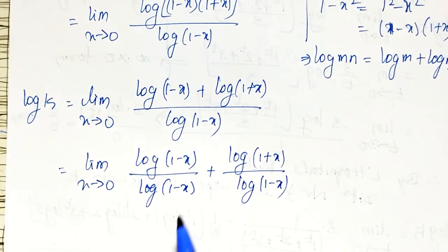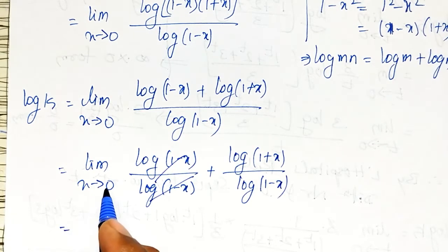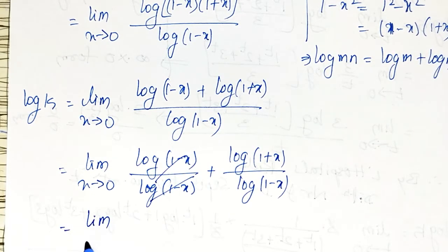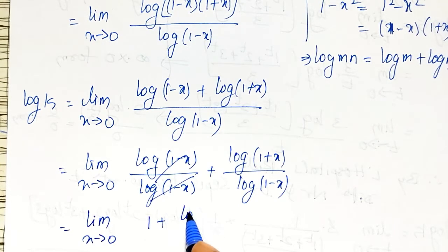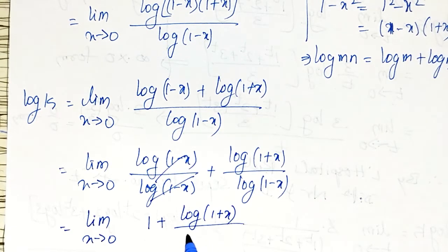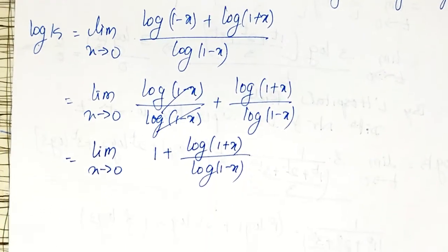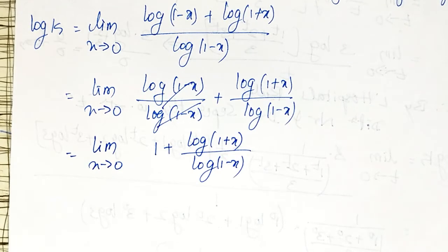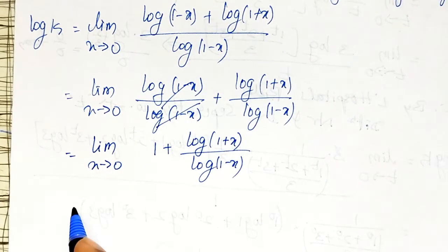The log(1 minus x) terms cancel, and the limit as x tends to 1 gives us 1 plus log(1 plus x) divided by log(1 minus x). Now substitute x tends to 1 and check whether we get a finite value or an indeterminate form.